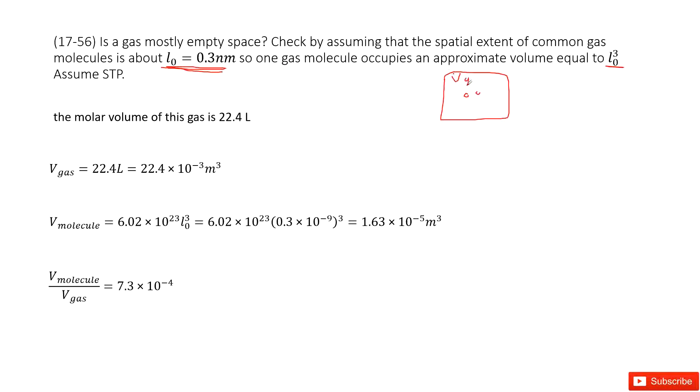So this is V gas. And then this small point is called the V molecules. We can consider this molecule V molecules is very small compared with V gas.